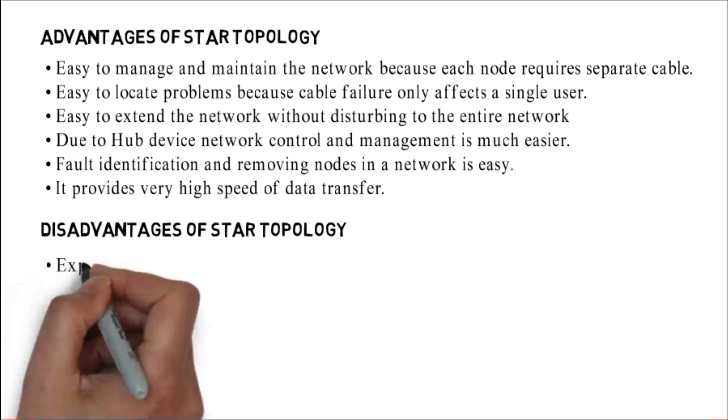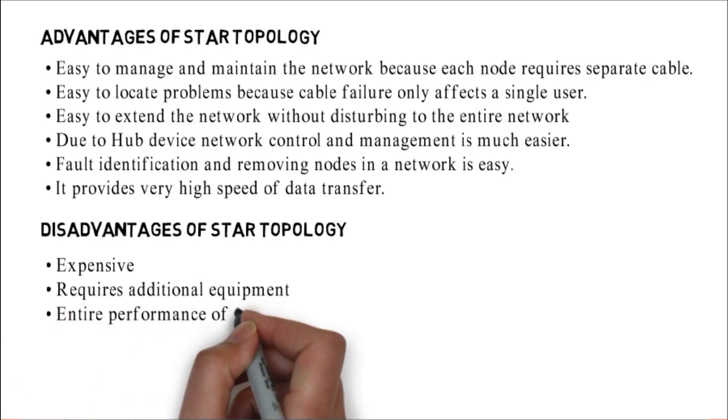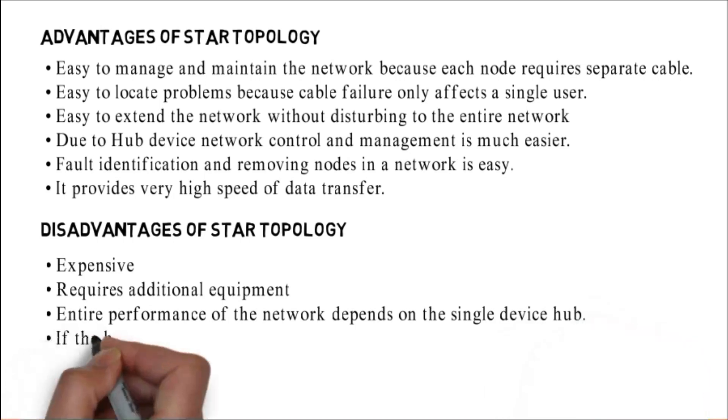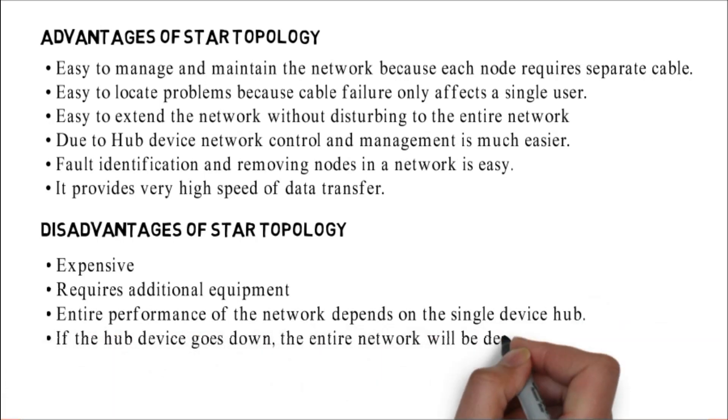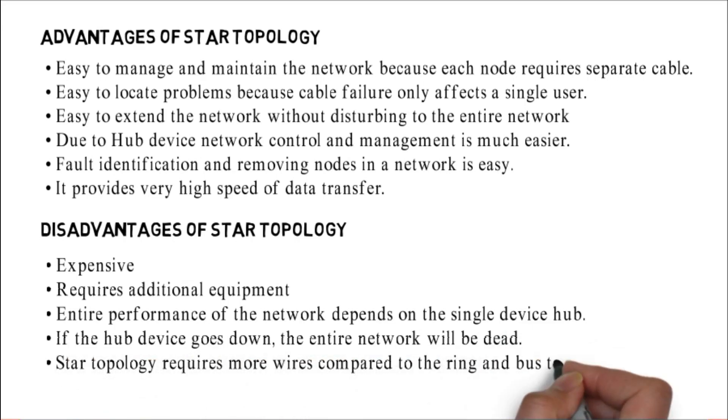Disadvantages of star topology: expensive, requires additional equipment, entire performance of the network depends on the single device hub. If the hub device goes down, the entire network will be dead. Star topology requires more wires compared to the ring and bus topology.